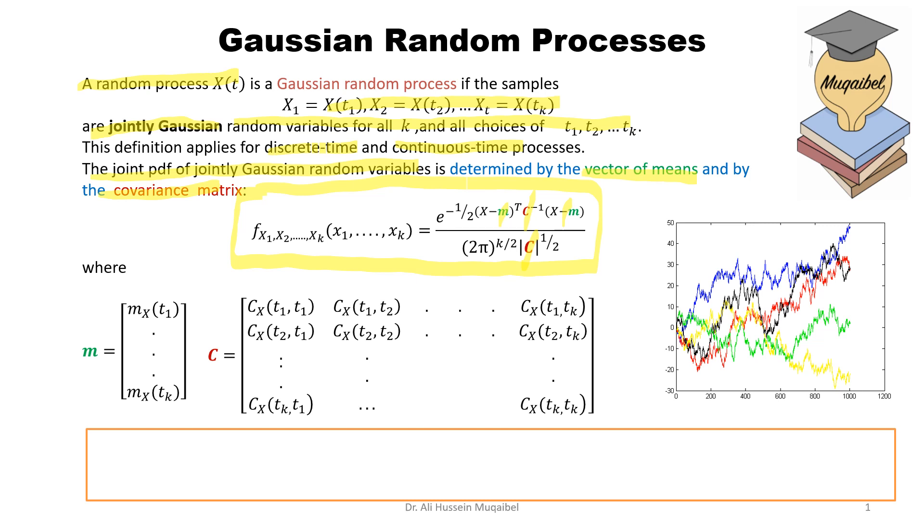Remember that a process is like an extension of random variables where we cover all the different instances of time. We can represent the vector of means by m.